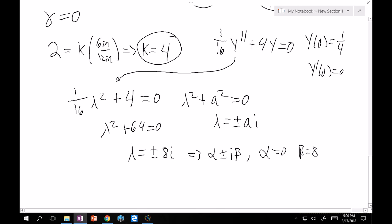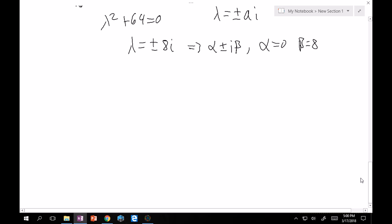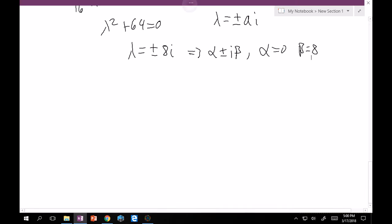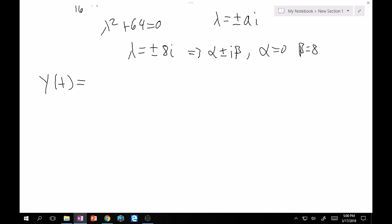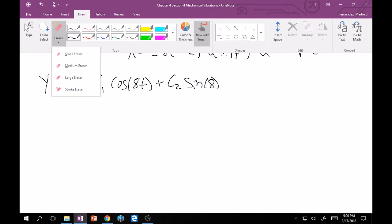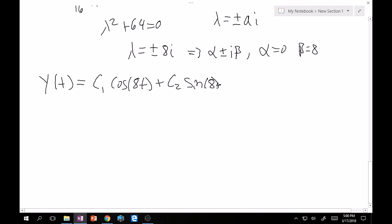So, let's write our general solution from here. y(t) is going to be equal to e^(0t) is just 1, so we don't need to worry about that. C₁ cos(8t) + C₂ sin(8t). This should make sense to you, hopefully, if you think about this from a physics standpoint.